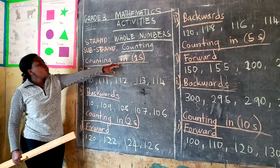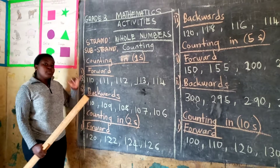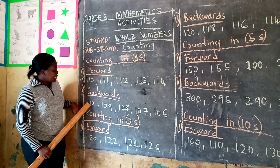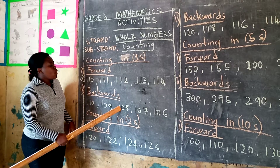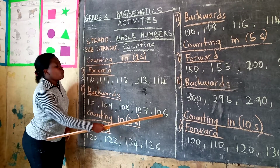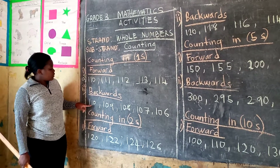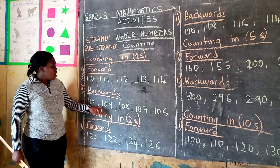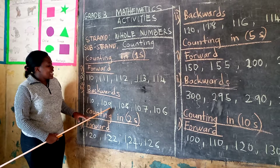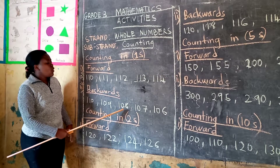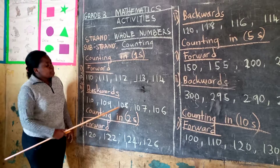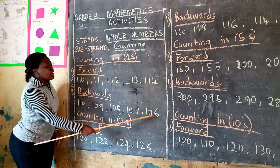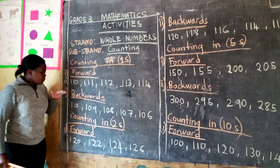We are still counting in ones, backwards. Now you are moving backwards. When you are moving backwards, you have to remove 1. For example: 110, 109, 108, 107, 106. So 110 minus 1, you get 109. Subtract from 109, you get 108. Subtract 1 from 108, you get 107. Subtract 1 from 107, you get 106. That is how you move backwards.